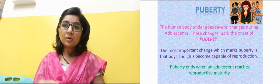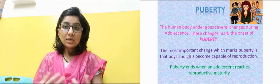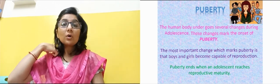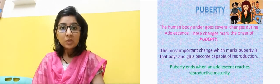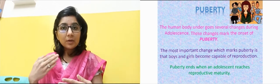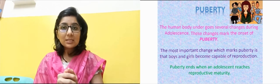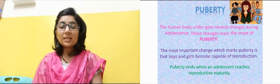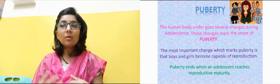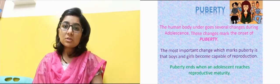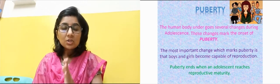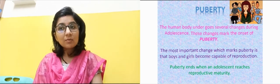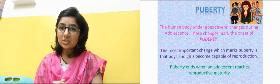The human body undergoes several changes during adolescence, and these changes mark the onset of puberty. The most important change is that boys and girls become capable of reproduction — this is a very notable change which occurs during puberty.